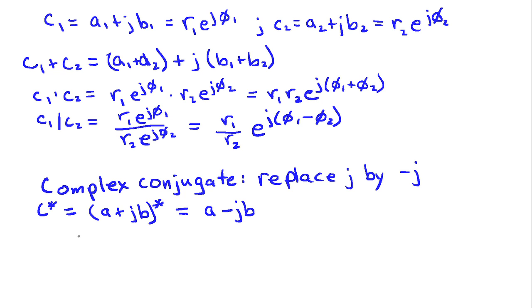And similarly, if I write this in polar form, r e to the j phi complex conjugate, what happens is the magnitude is unchanged but the sign of the phase gets changed. So the j changes its sign to give us r e to the minus j phi.